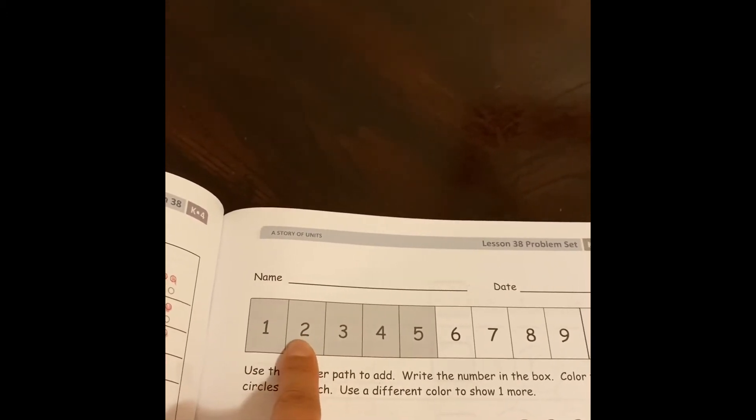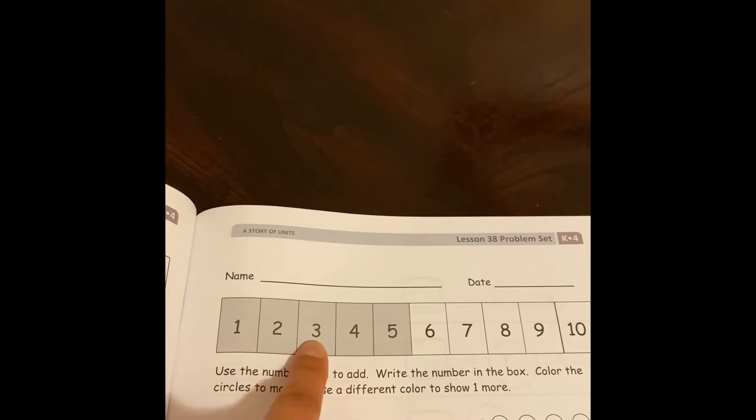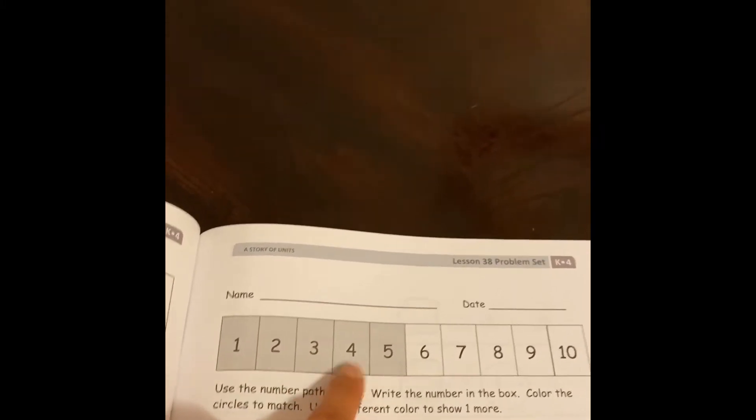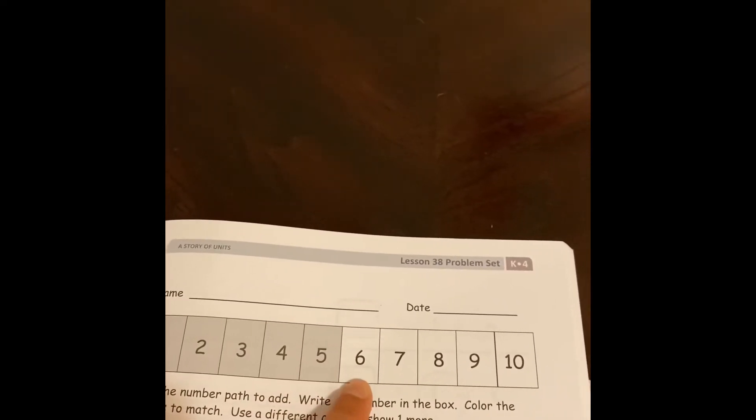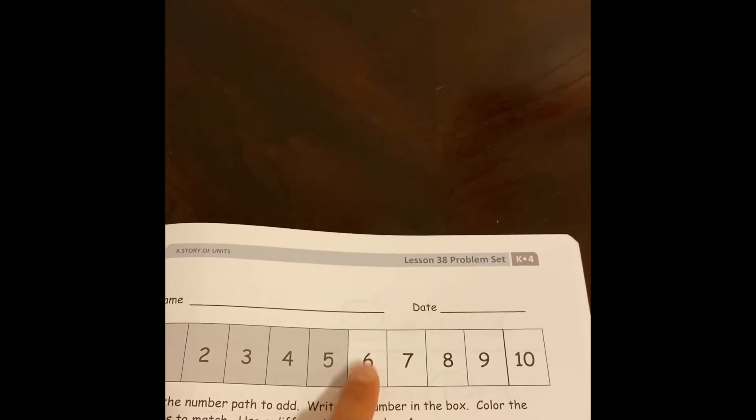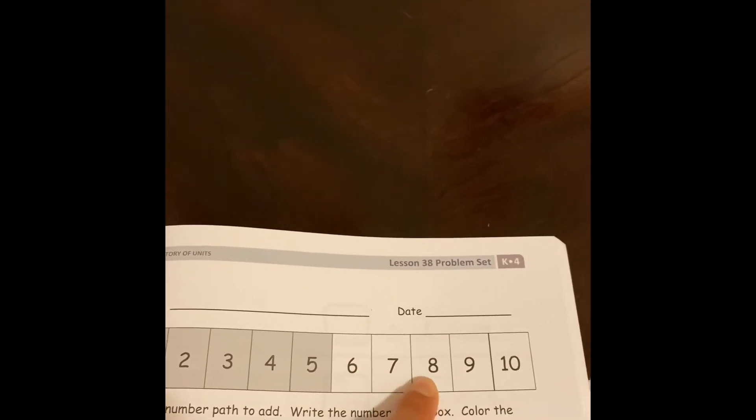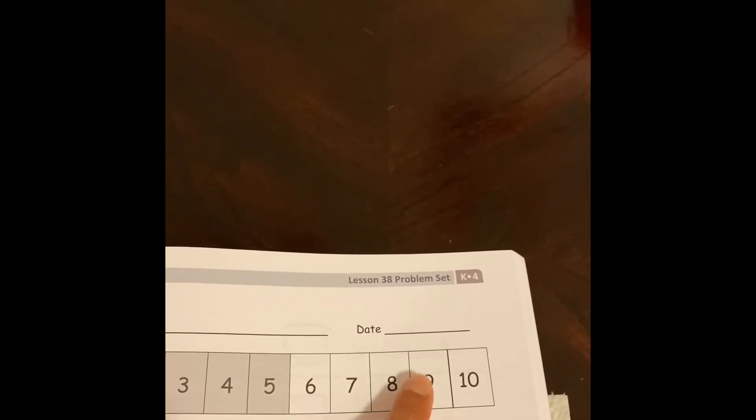So we're going to do one and one more is two. Two and one more is three. Three and one more is four. Four and one more is five. Five and one more is six. Six and one more is seven. Seven, one more is eight. Eight, one more is nine. Nine and one more is ten.